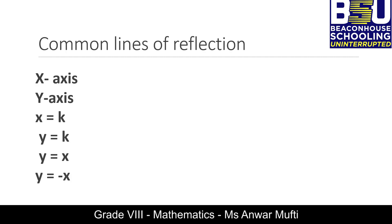In order to understand reflection, we need to be familiar with some common lines of reflection: the x-axis is a horizontal line passing through the origin; the y-axis is a vertical line passing through the origin; the vertical line equation x = k; the horizontal line equation y = k; y = x; and y = negative x.